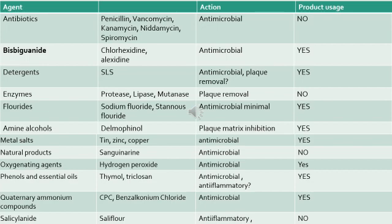Fluorides — sodium fluoride and stannous fluoride — are used mainly to treat caries, as an additive for chlorhexidine mouthwashes, and in anti-caries toothpastes, though antimicrobial activity is quite minimal. Metal salts, mainly zinc and copper, have antimicrobial action and have been used. Natural products — sanguinarine — is an antimicrobial agent no longer widely used because of its carcinogenic effect, though it can still be found in some herbal toothpastes. Oxygenating agents, mainly hydrogen peroxide, have antimicrobial action.